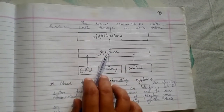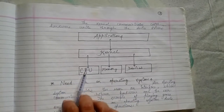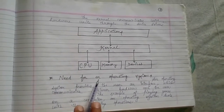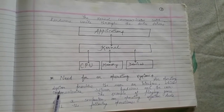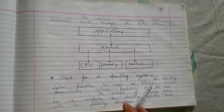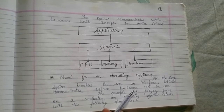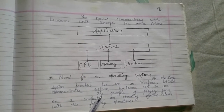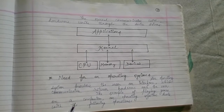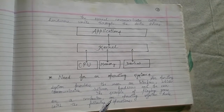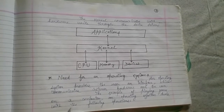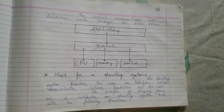The kernel communicates with the hardware units through device drivers. Applications of the kernel include managing the CPU, memory, and devices. An operating system provides the user an interface that communicates between the hardware and the user — for example, playing games on a computer.